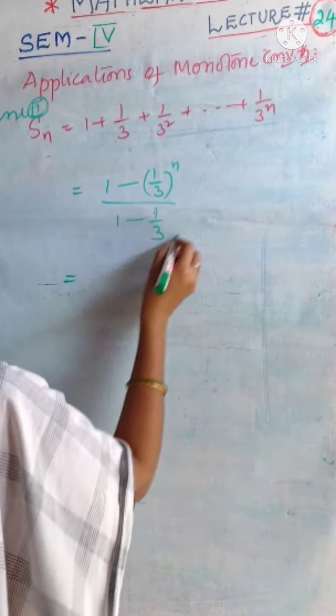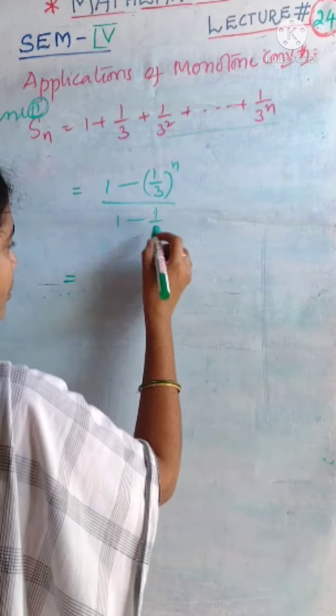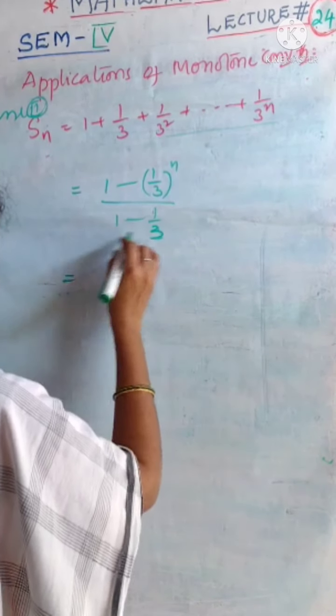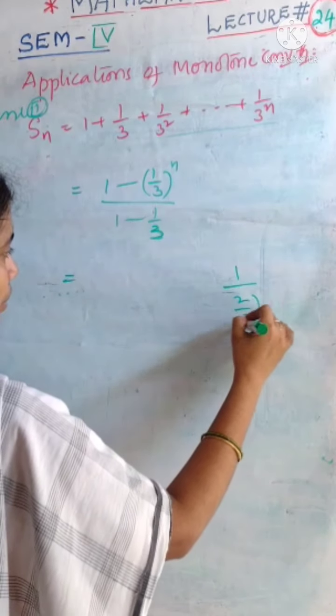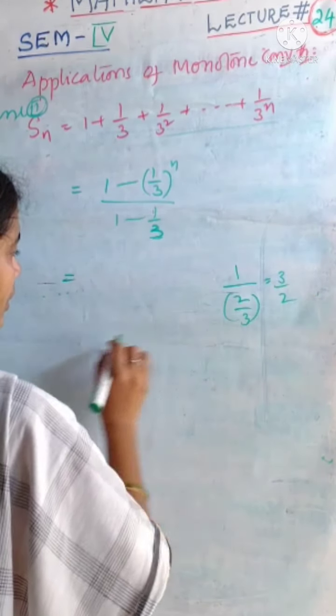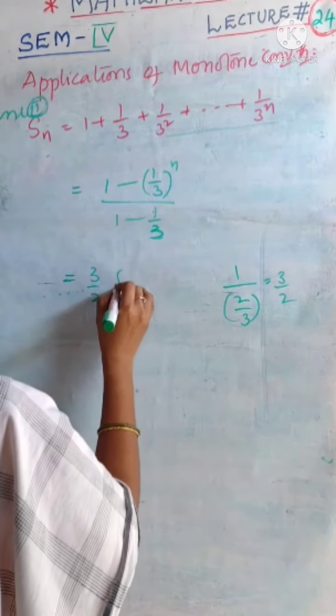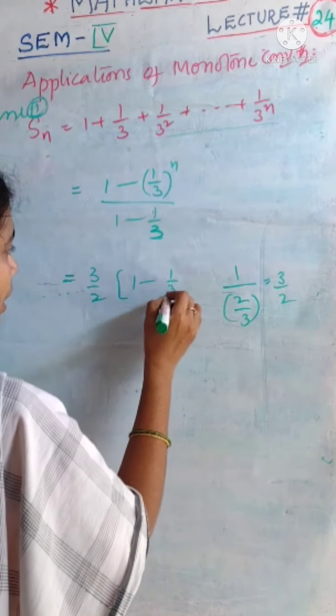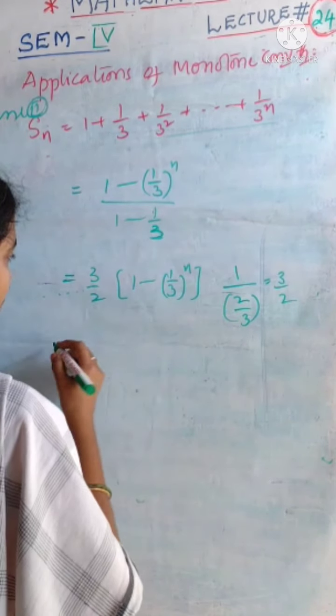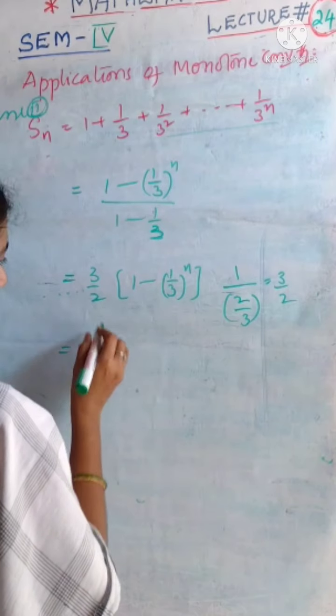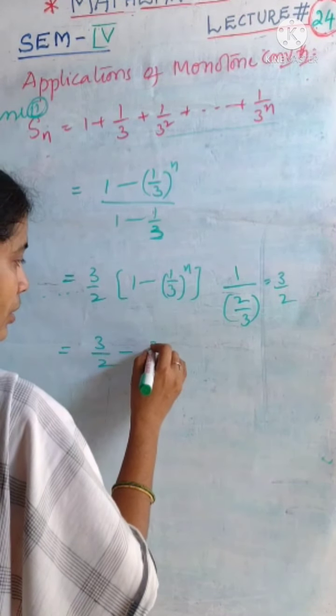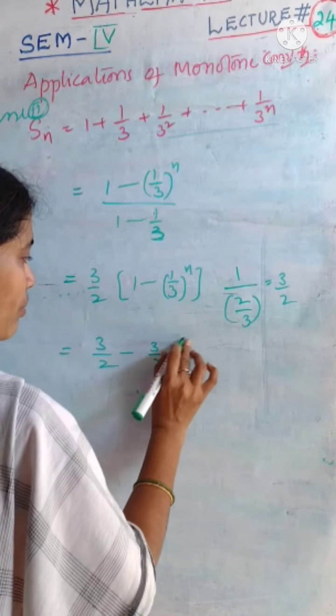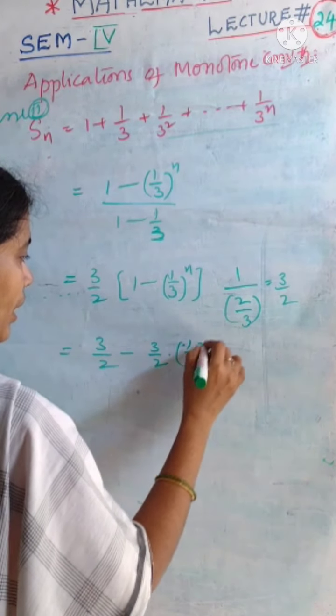This is equal to, the denominator value 1 minus 1 by 3 can be written as 3 minus 1 that is 2 by 3. 1 by 2 by 3 can be written as 3 by 2. So 3 by 2 into 1 minus 1 by 3 whole power n. This is our Sn value, which can be written as 3 by 2 minus 3 by 2 into 1 by 3 whole power n.